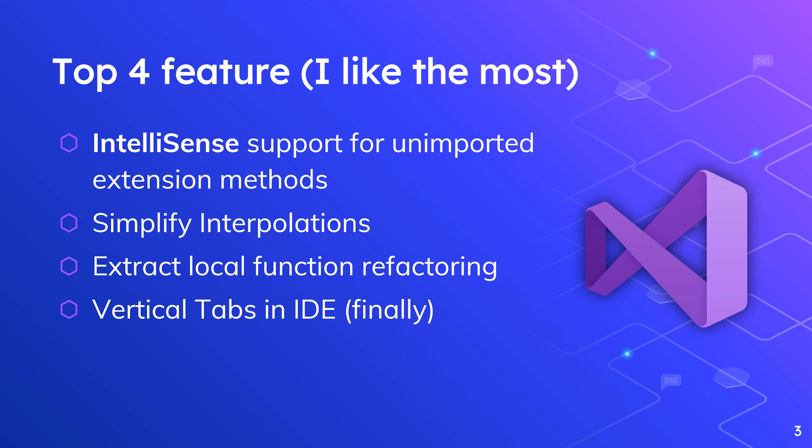Visual Studio IDE is going to give you options to show how to change code by changing the string interpolation. Third, extracting the local function refactoring — you can extract code in Visual Studio by selecting a code in a method and extracting it. With the local function feature of C#, you can extract any line of code within a method and create a local function with all the skeleton code.